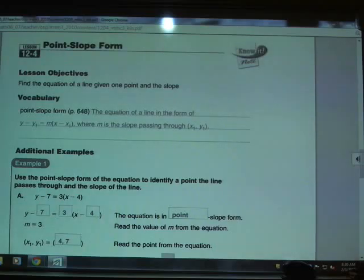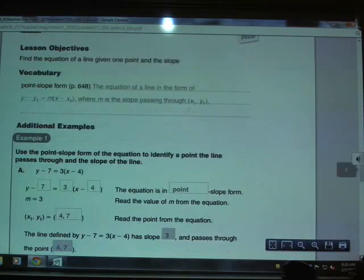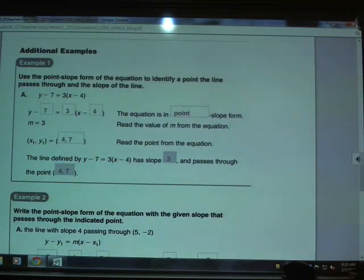Let's go ahead and put that definition to use as we look at the first example here. It says use the point slope form of an equation to identify a point the line passes through and the slope of the line. And you can see they've given us y minus 7 equals 3 times x minus 4.